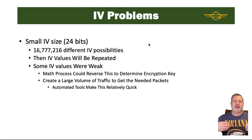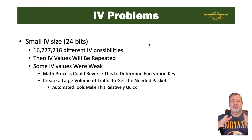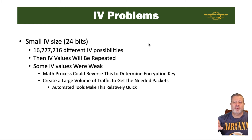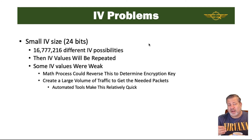When we look at the IV, it's 24 bits long, meaning there are just over 16 million different possibilities — 16,777,216 different IV values. Once you go through that number, IVs begin to repeat. Some IV values are actually weaker than others, and we can use a math process to reverse this and determine the encryption key. All we need is to push a large volume of data across the wireless network, then figure out the IVs and break the encryption key, especially using weak repeated IV values. Automated tools make this relatively quick.